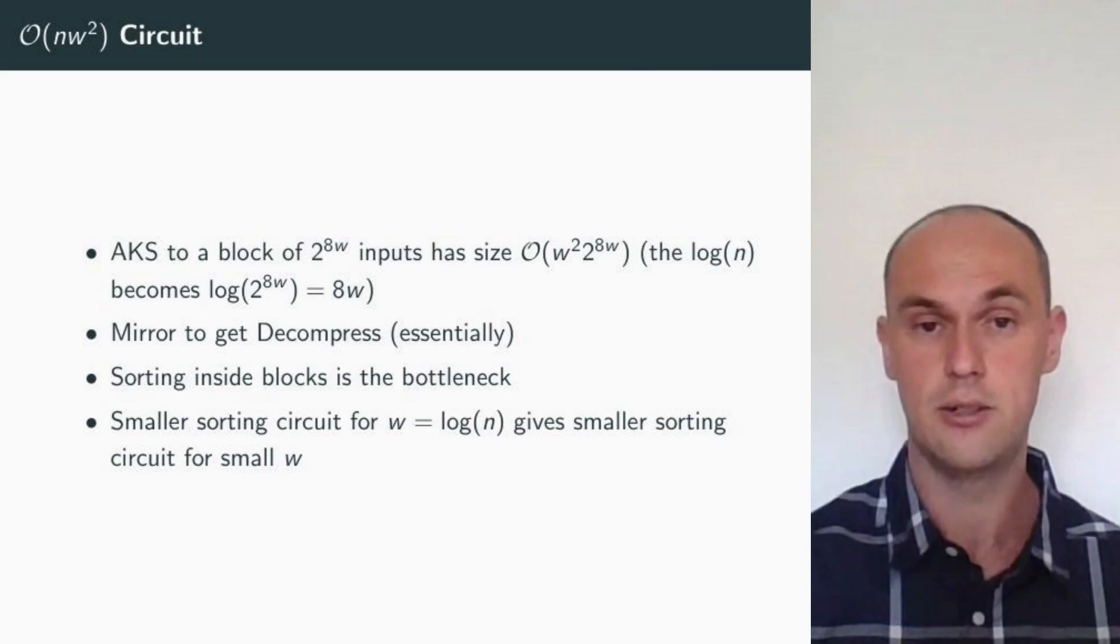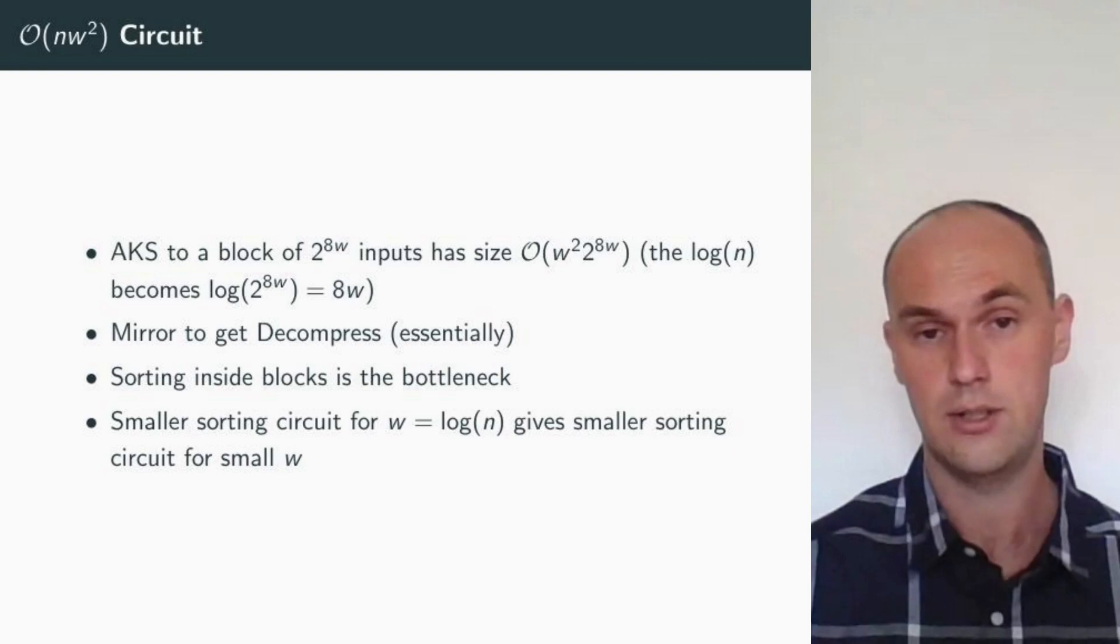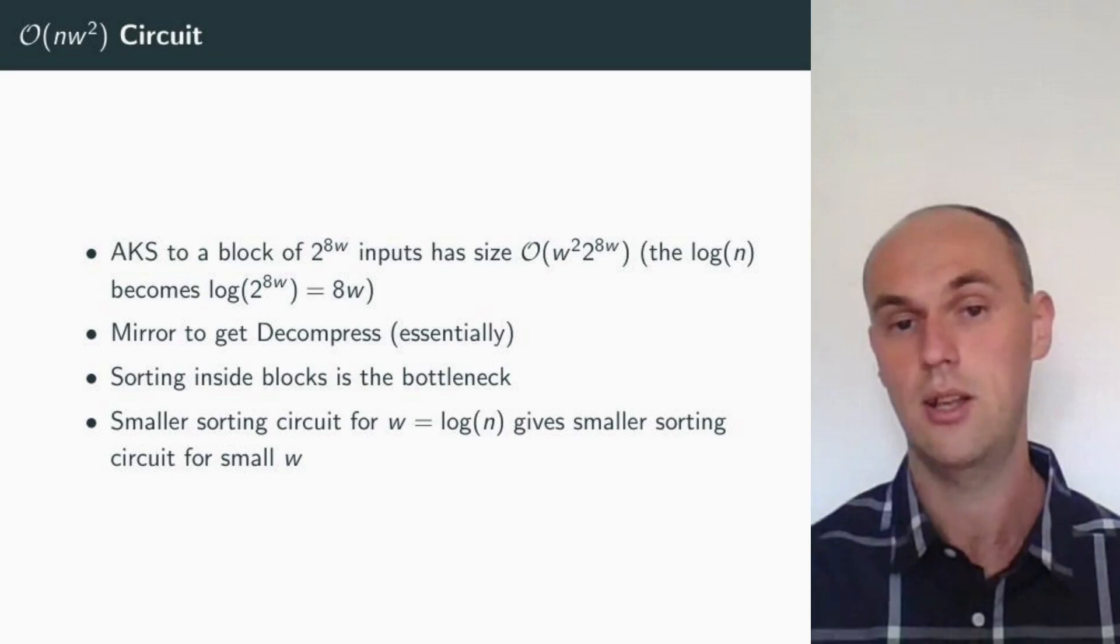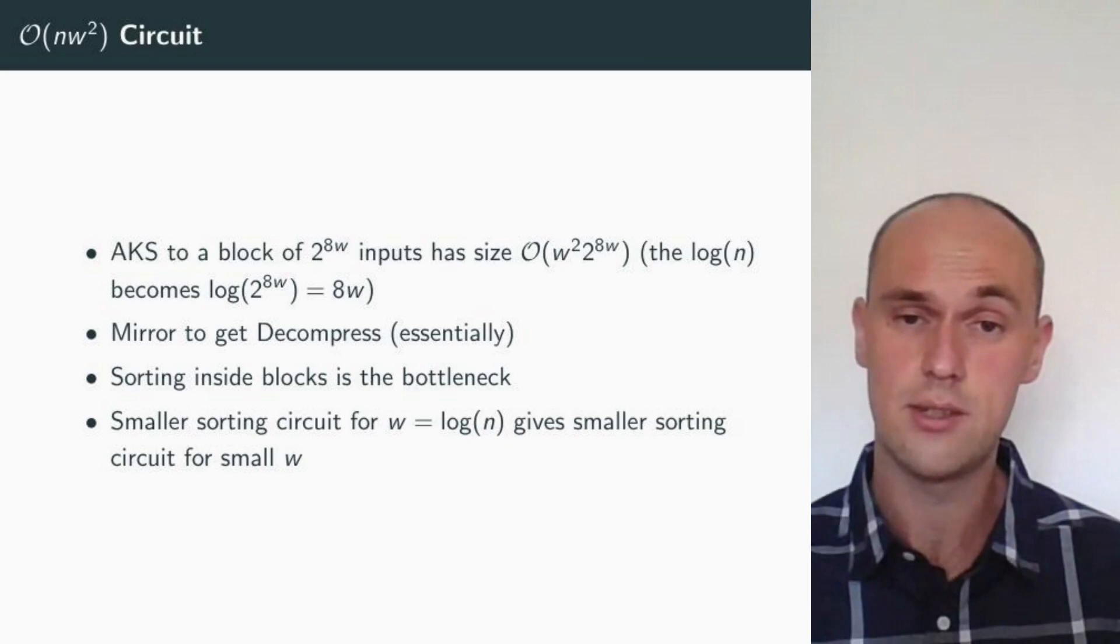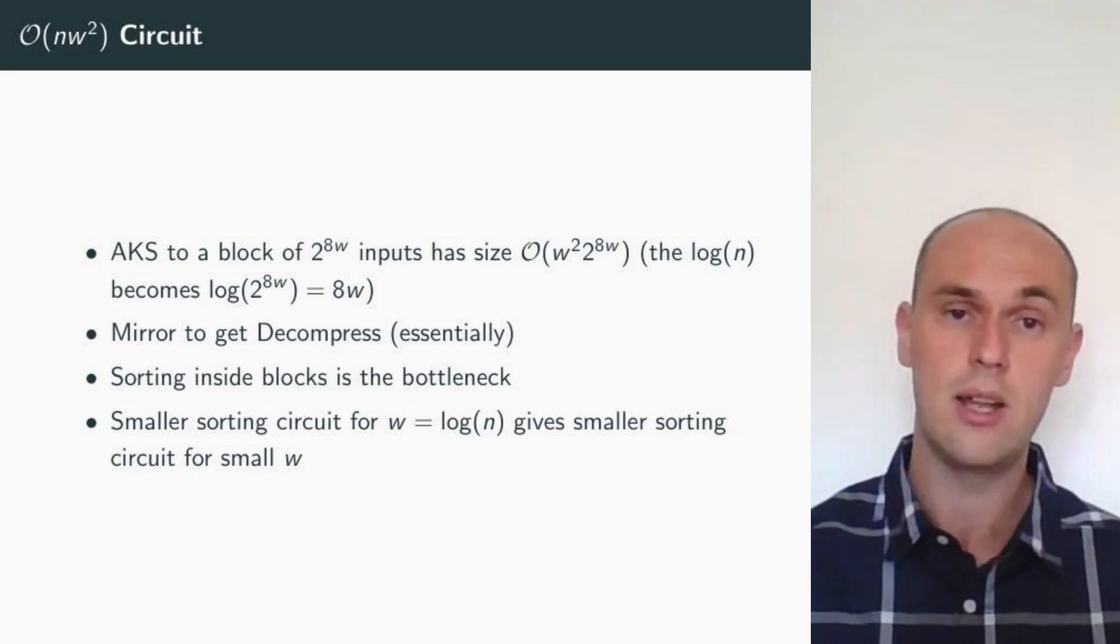So, as I have said already, the sorting part, the sorting of the blocks by the Ajtai-Komlós-Szemerédi sorting, is the bottleneck. That means whenever we are given a smaller circuit for sorting numbers of log n bits, then we have a smaller circuit for sorting numbers represented by very small w, smaller than log n. That's our n w squared circuit.